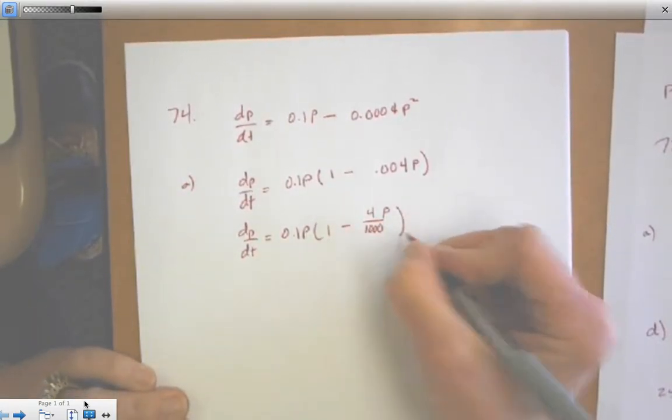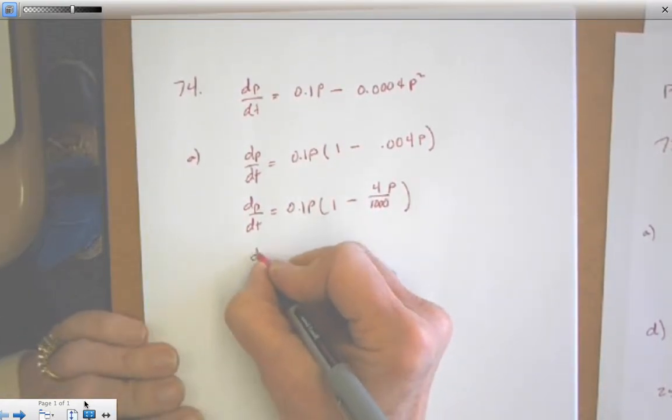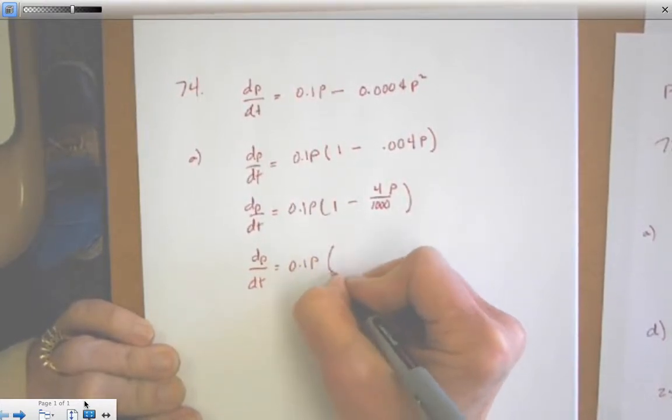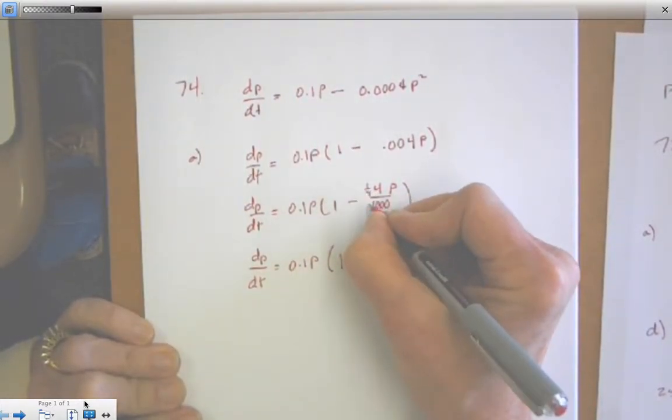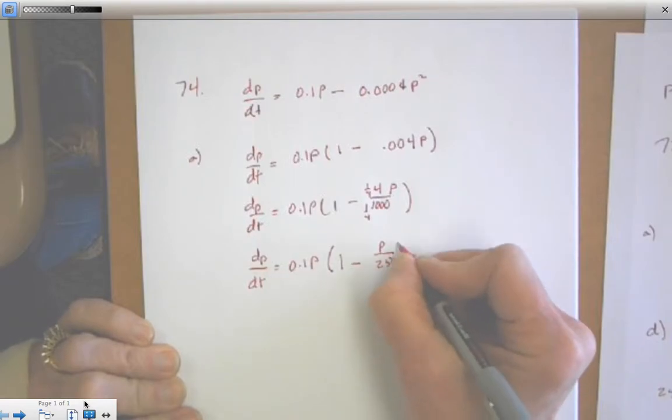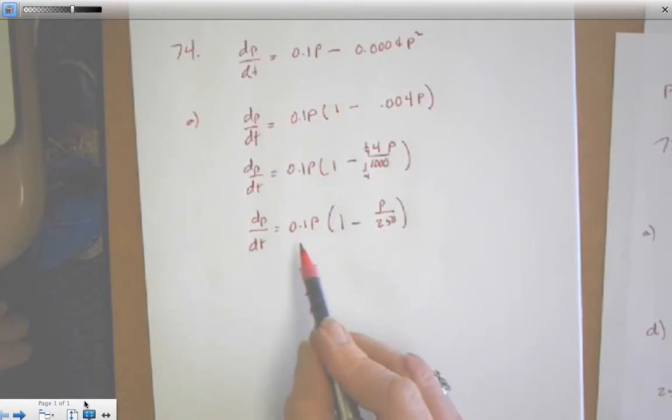So I've got 4P over 1,000. Still not like I want it. I want that coefficient for P to be 1. So I'm going to multiply by 1 fourth over 1 fourth. So it's 1 minus P over 250. Now I've got it in its differential equation form. Now I know the carrying capacity, the value of K.